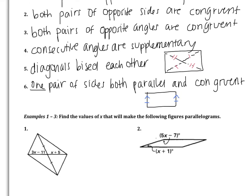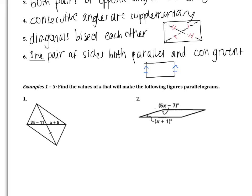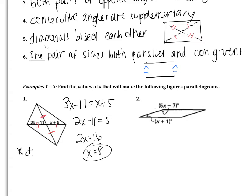The first way we'll see these properties applied is: find the values of x that will make the figures parallelograms. In figure one, the two x expressions are both on the diagonal, so this corresponds to property 5 — the diagonals bisect each other. The first diagonal is already bisected. We need the second diagonal bisected too, so: 3x minus 11 equals x plus 5. Subtracting x gives 2x minus 11 equals 5; adding 11 gives 2x equals 16, so x equals 8. The way used is that diagonals bisect each other.